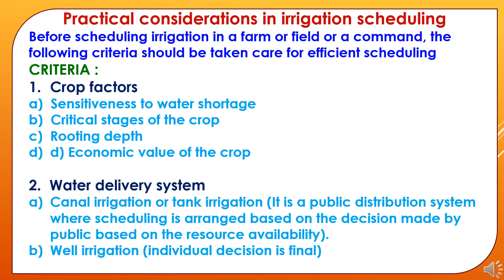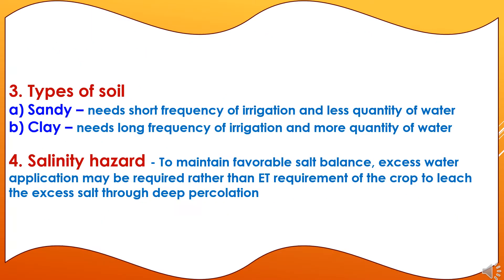The second factor is the water delivery system, which has two types: canal irrigation or tank irrigation, which is a public distribution system where scheduling is arranged based on decisions made by the public according to resource availability; and well irrigation, where the individual decision is final. The third criterion is types of soil — for example, sandy soils need short frequency of irrigation and less quantity of water.